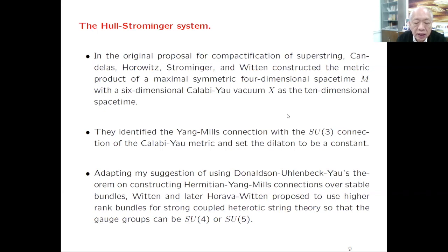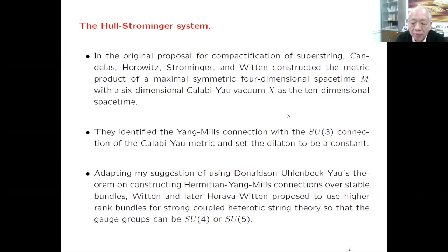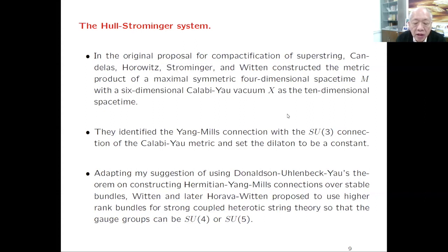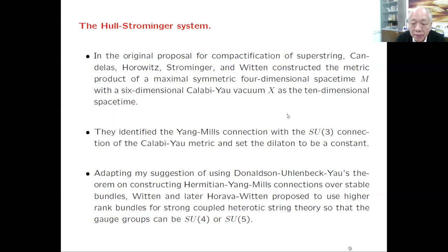When the Yang-Mills bundle is no longer the tangent bundle, Donaldson, Uhlenbeck, and I constructed something called Hermitian-Yang-Mills connections over stable bundles. I suggested this to Ed Witten in 1985 when we finished the proof. Witten and later Horowitz-Witten proposed to use high-rank bundles for strongly coupled heterotic string theory. The gauge group can be either SU(4) or SU(5), enlarging from the original SU(3) connection.